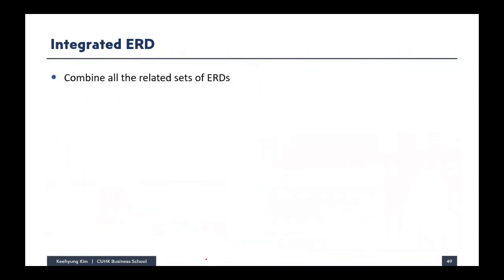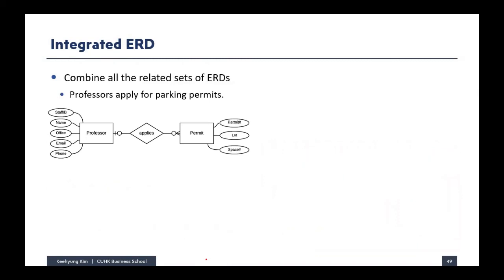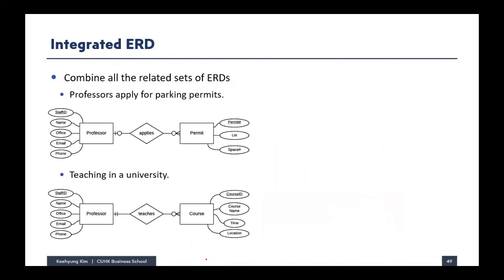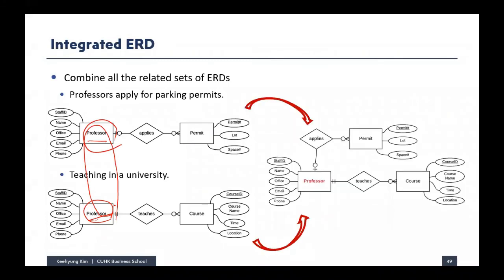Here's a simple example: the university has two business events — professor applying for parking permit and teaching in the university — each with its own ER diagram. To make an integrated ER diagram, find what is common: the professor entity appears in both. You make only one professor entity and combine the two diagrams around it, producing the full integrated ER diagram for the university database.